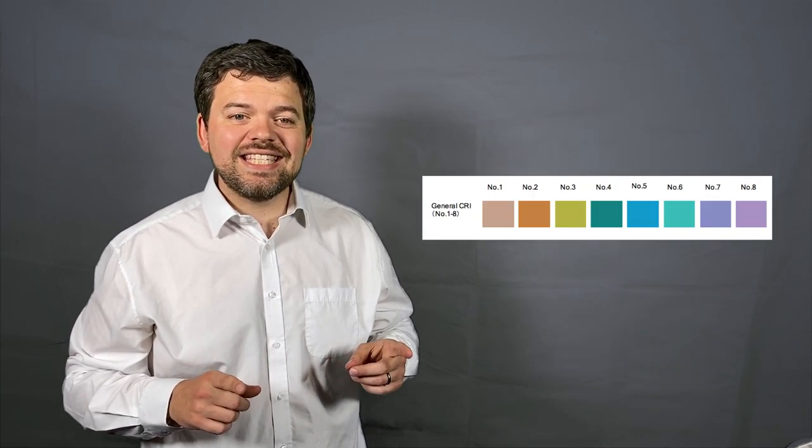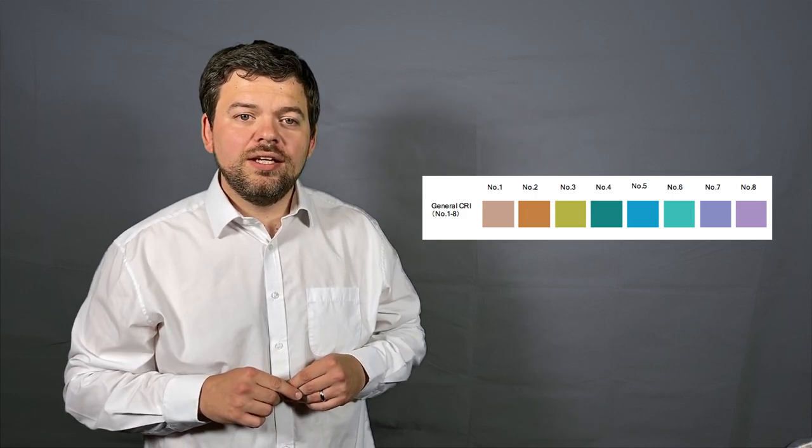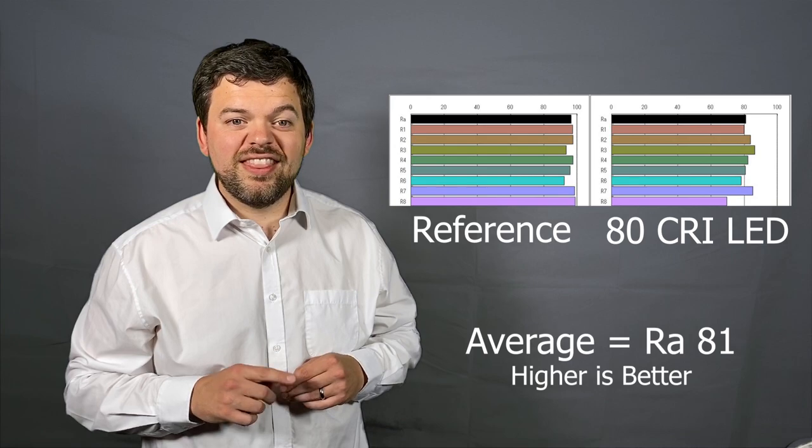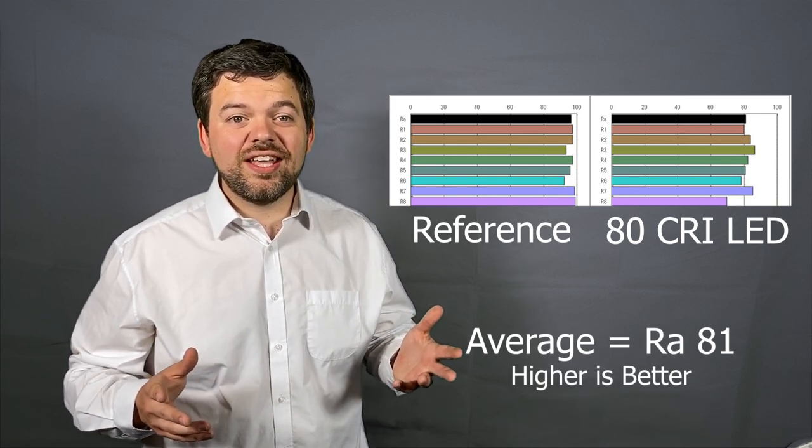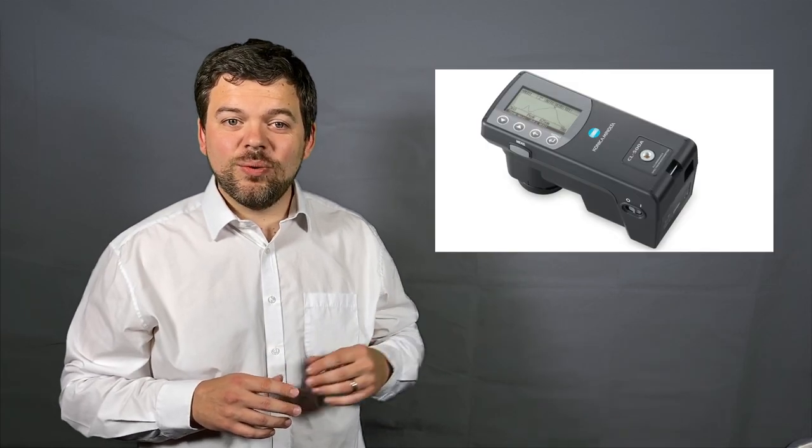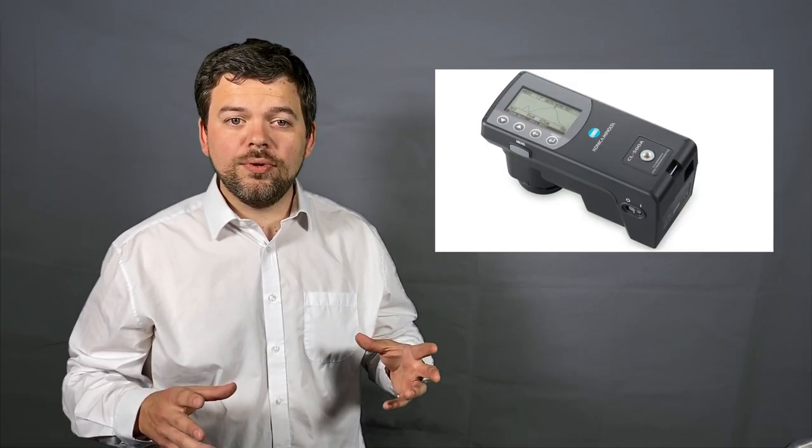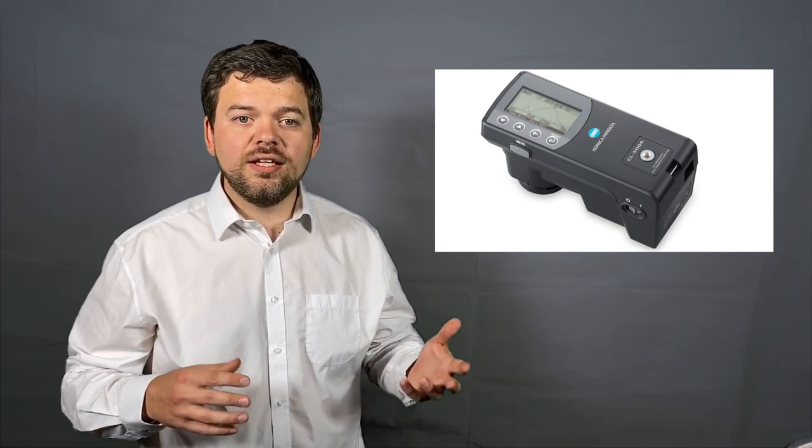The test source is compared against the reference source and both are used to illuminate eight standard samples. The perceived colors are then compared using a standard formula, then averaged to get the final CRI. These days we use handheld photometers which measure the CRI accurately by analyzing the spectral output of a light source and then calculating it.